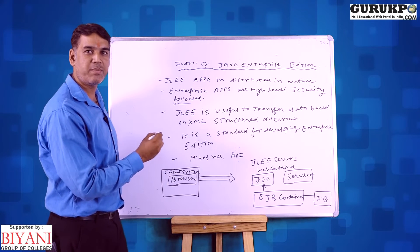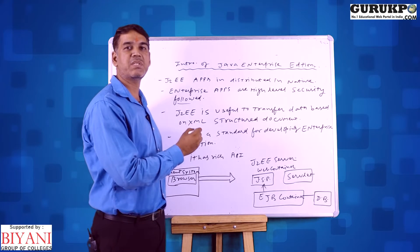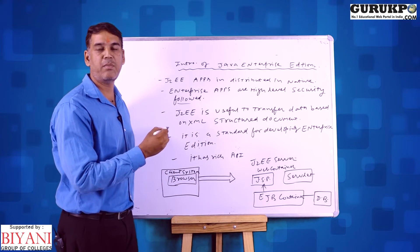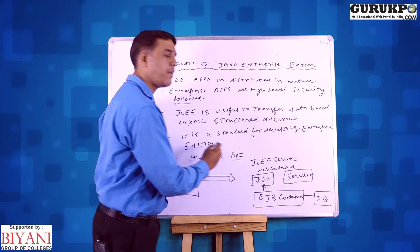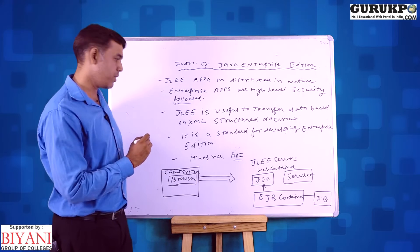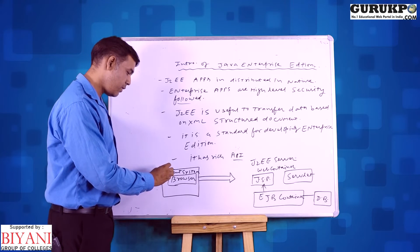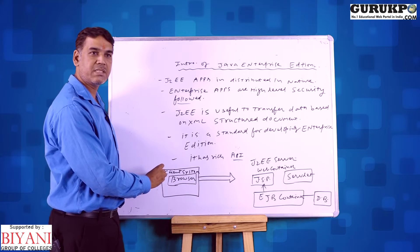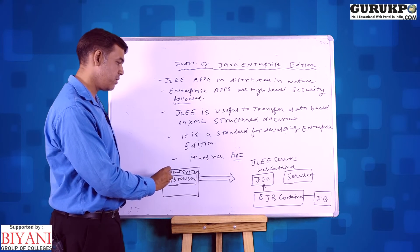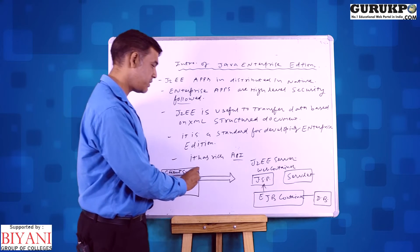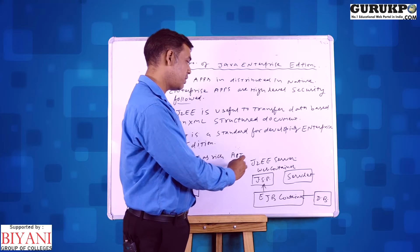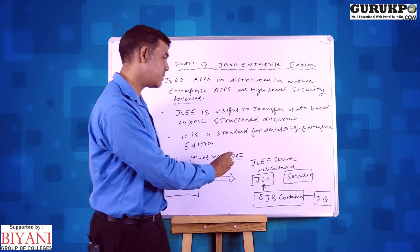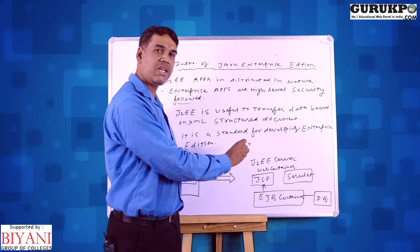We have rich APIs also — APIs is an Application Programming Interface. We have inbuilt files inside the J2EE server. First of all, we discuss about the client system, which is basically defined with the browser. The browser gives a request to the J2EE server, and the web container manages the JSP pages as well as servlets.